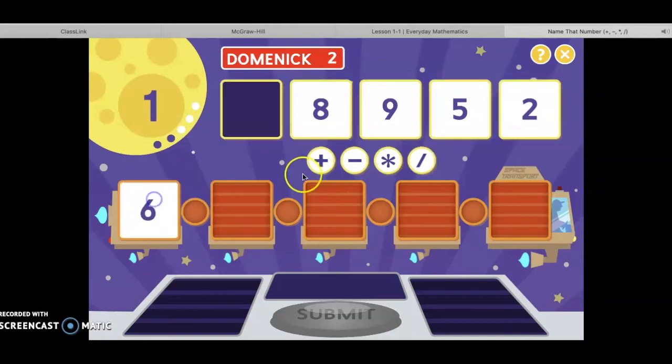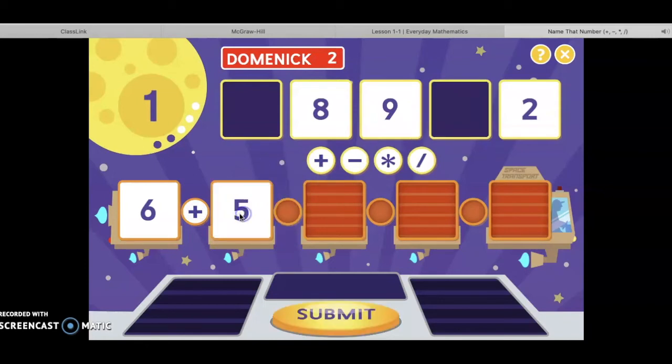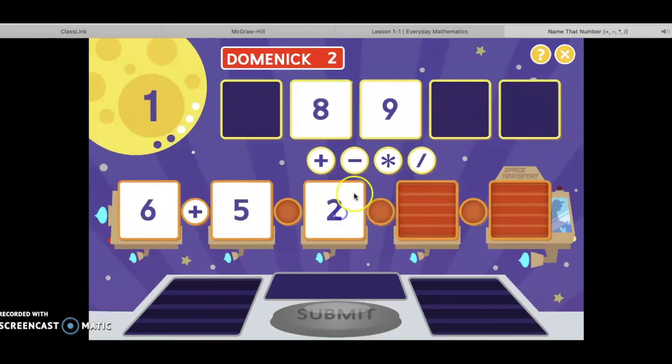So let's see. Six plus five, that's eleven. Eleven minus two is nine. Nine minus eight should equal one.